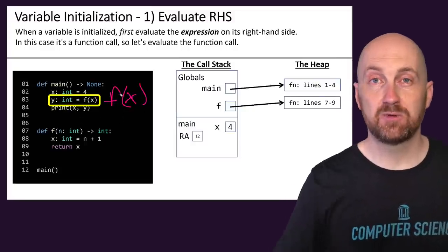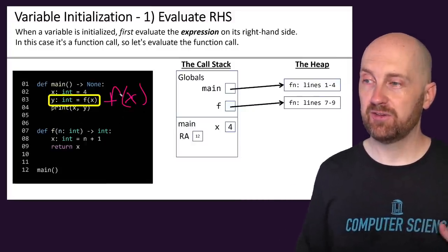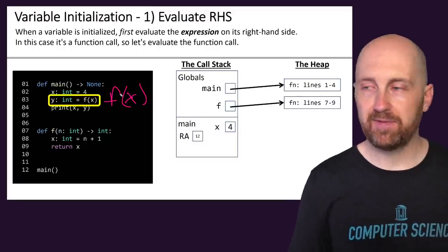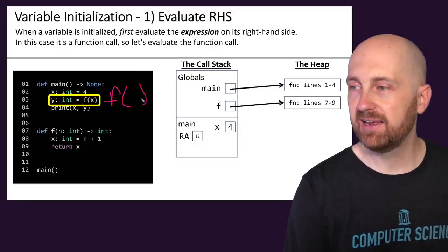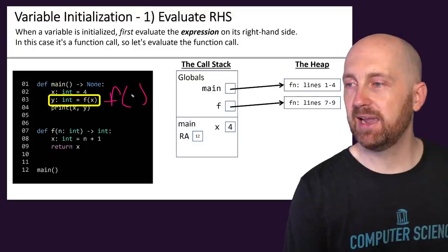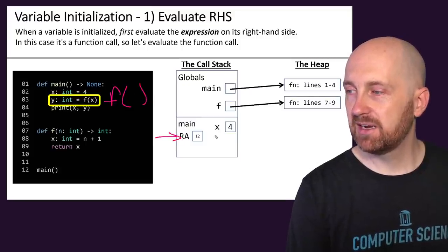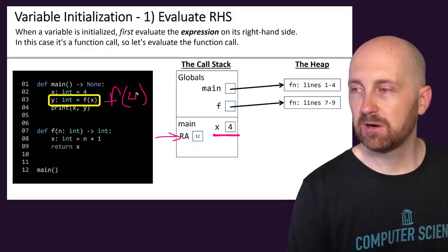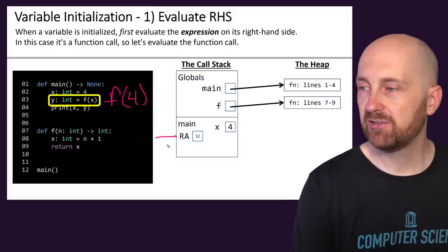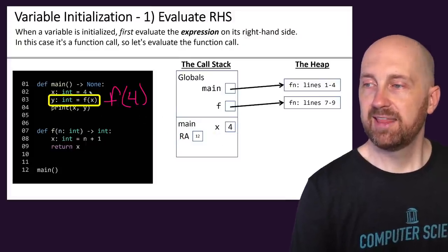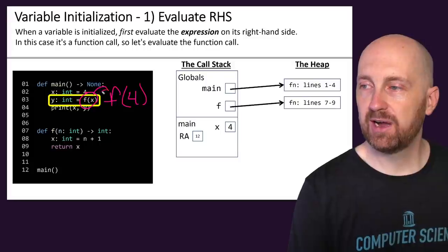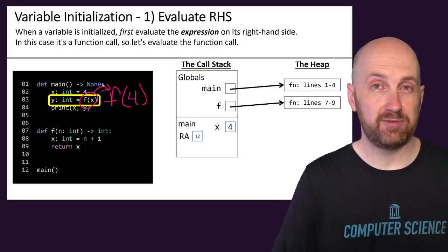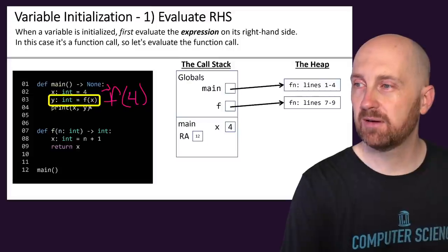The next step is to evaluate our arguments. Here we've got f(x). We need to evaluate x: we look it up using name resolution, and x's value is 4 in our current frame. So this call f(x) evaluates in one step to f(4), but we still haven't fully evaluated this function call yet.